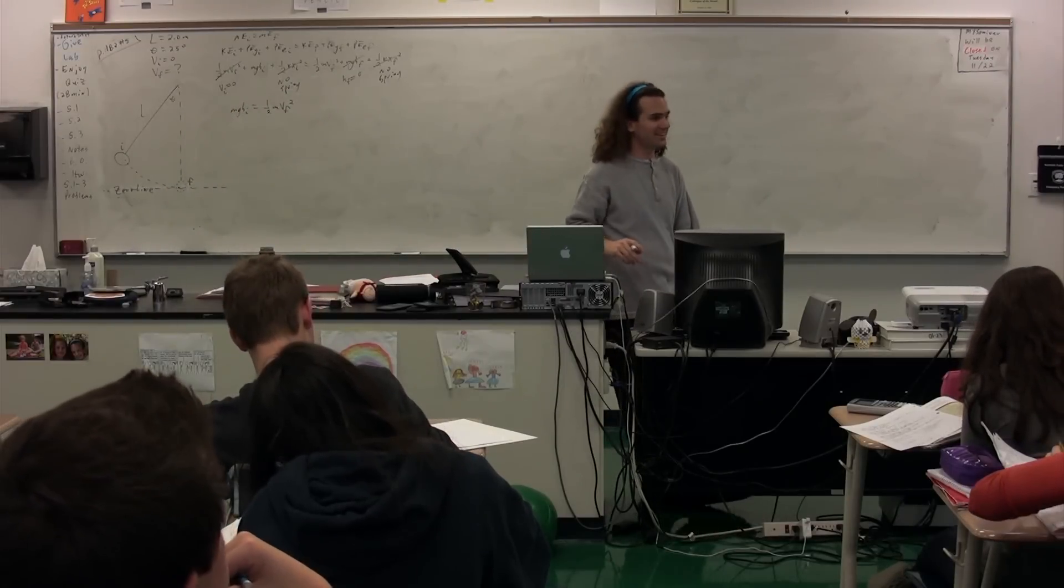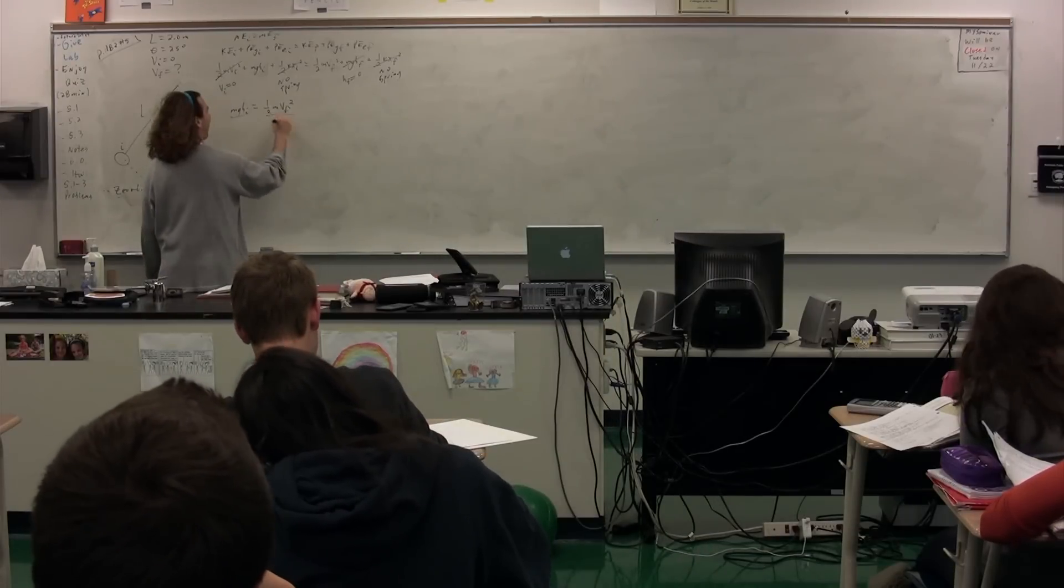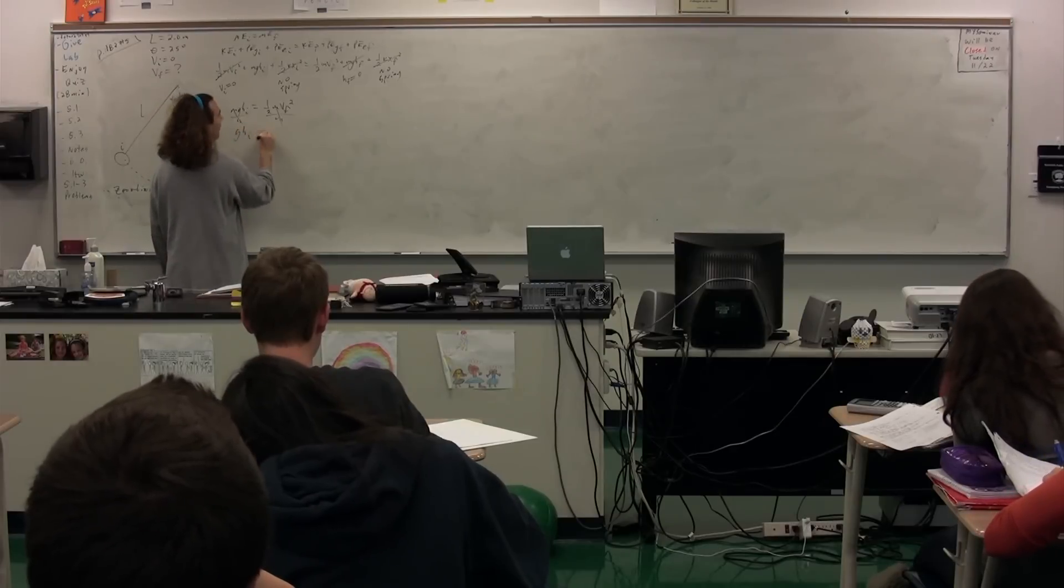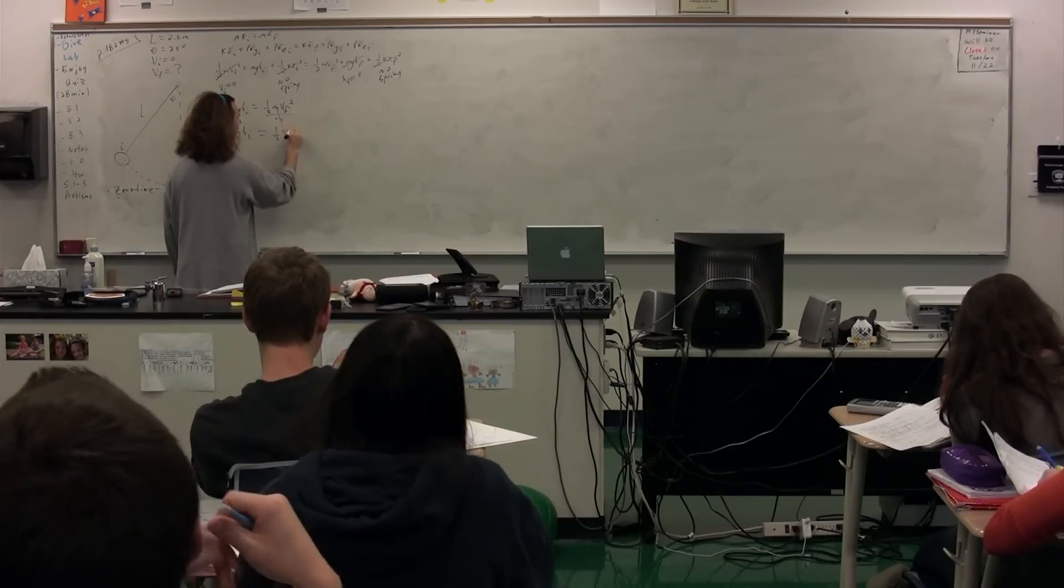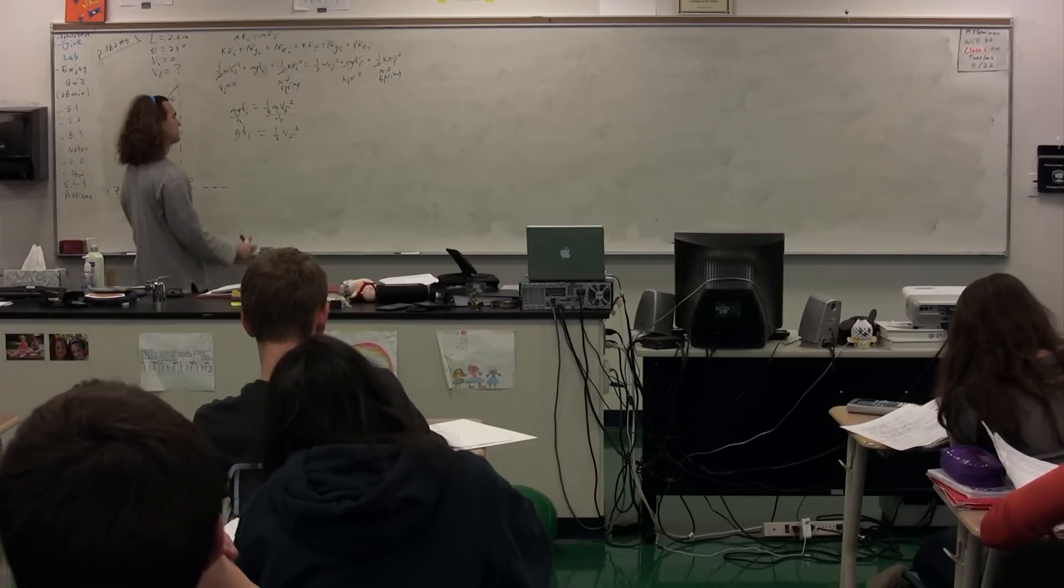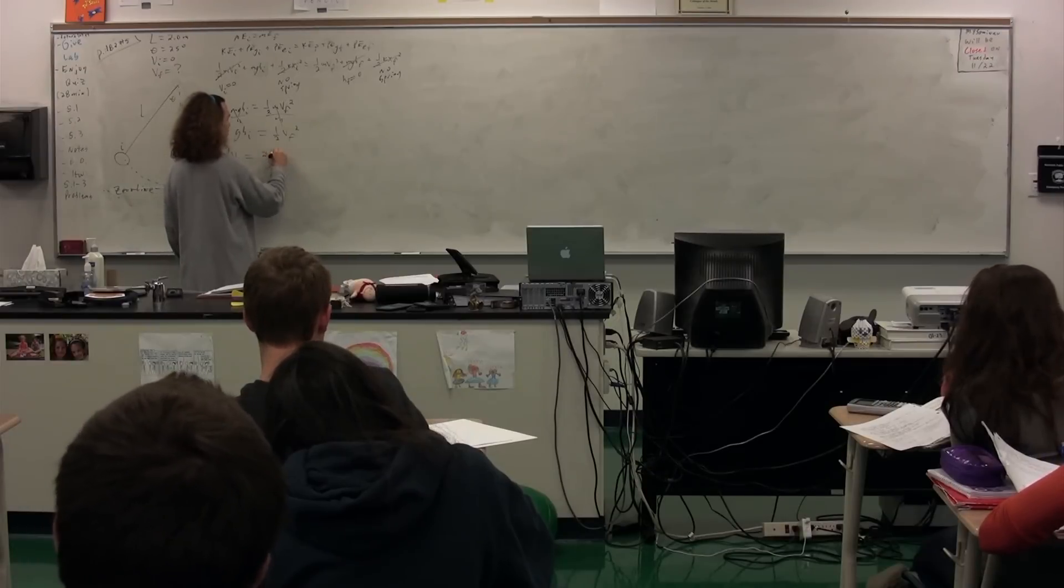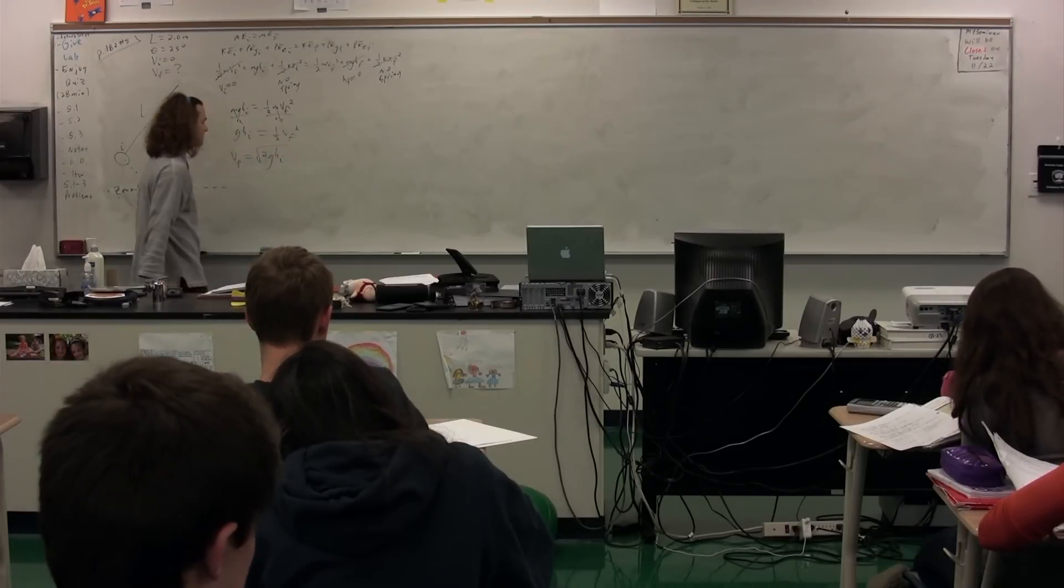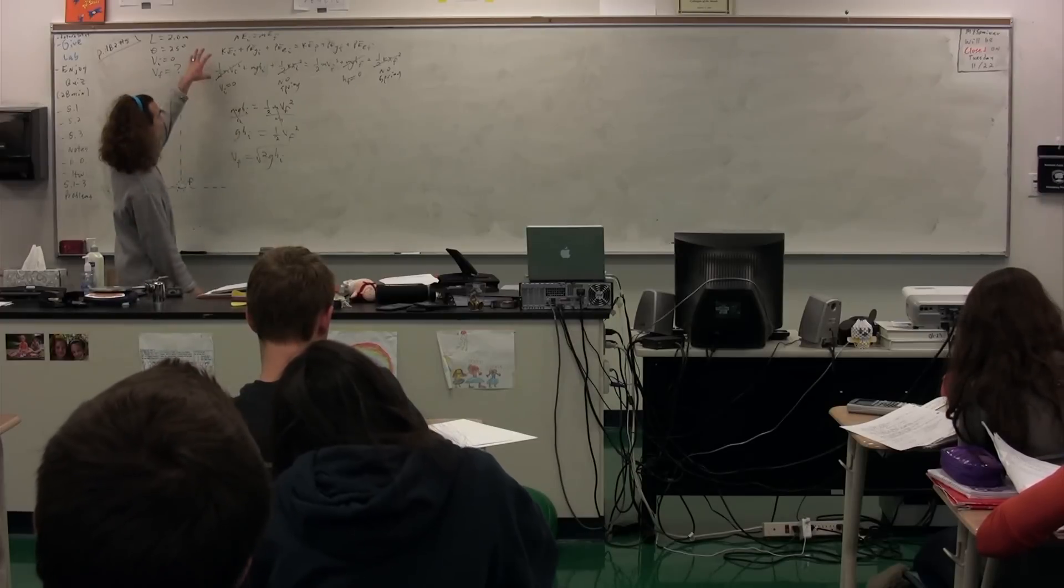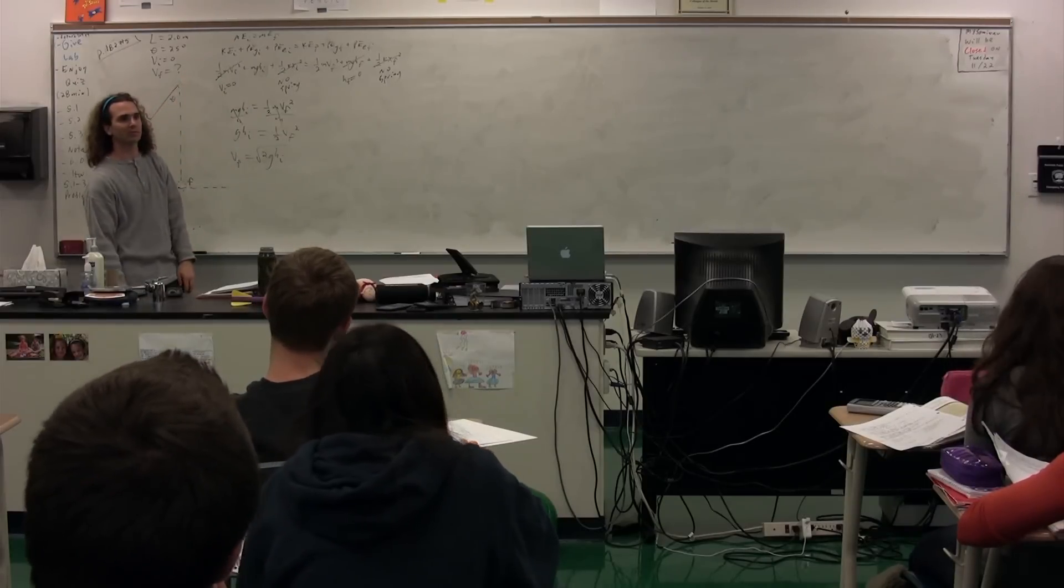Everyone go ahead. We can be equitable, we can take mass from everyone. Notice, we now get that the velocity final equals, multiplying both sides by two and taking the square root of both sides, we get that the velocity final equals the square root of 2gh initial. We started with this gigantic equation, we end with this little one with just three variables.